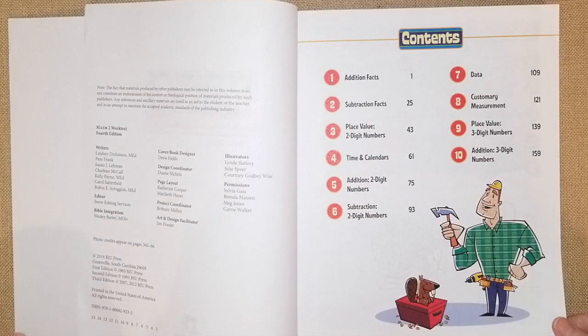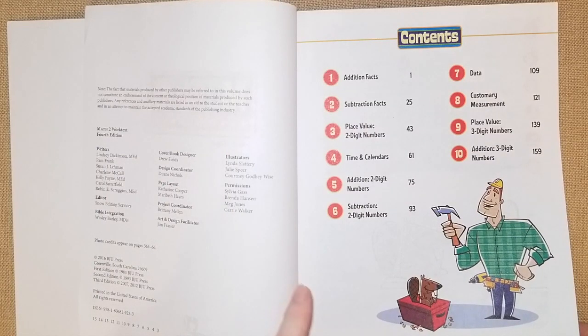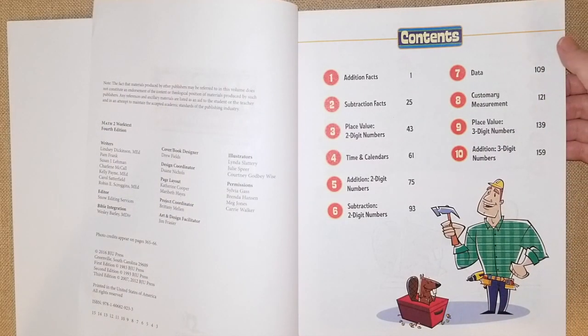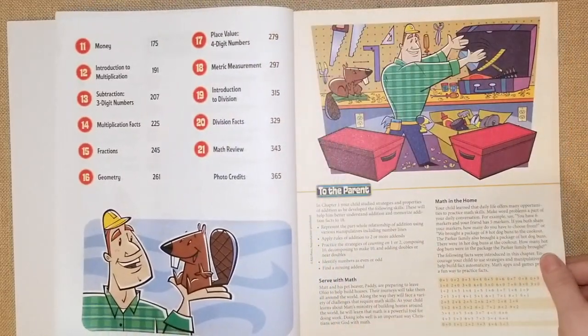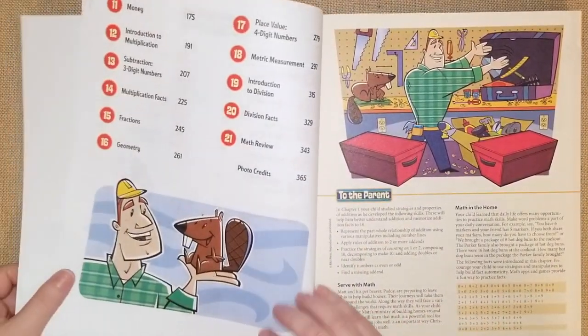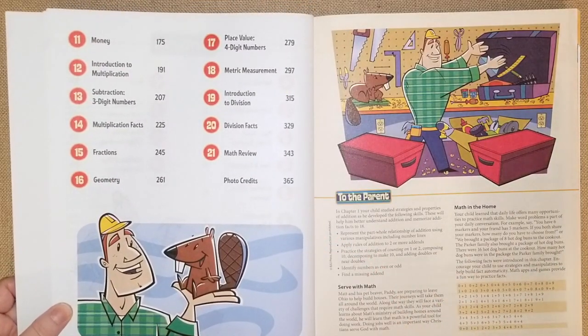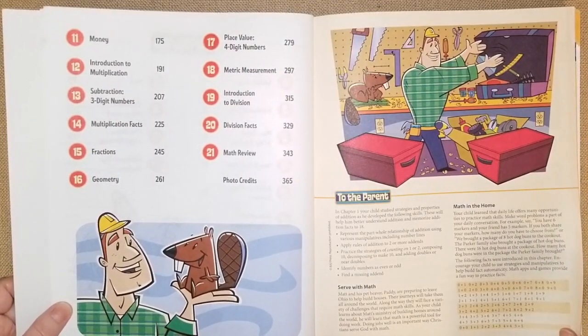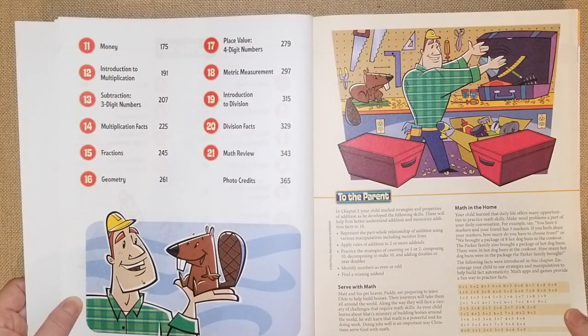They will be learning a lot of new concepts but at the beginning they're going to be reviewing first grade work, which is addition facts, subtraction, then they're going to get into two digit numbers, times and calendar, two digit number addition, and then two digit number subtraction in chapter six. Chapter seven they're doing data, customary measurement, three digit numbers, addition, three digit numbers, and then as you can see in the 11th chapter and beyond they're getting into new things. So they're doing money, introduction to multiplication, three digit number subtraction, multiplication facts, fractions, geometry, four digit numbers with place value, the metric system, and then an introduction to division and division facts.